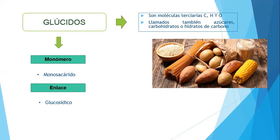Recordemos que esto, ¿dónde lo encontramos? En nuestra alimentación. ¿Y para qué necesitamos los glúcidos? La parte más pequeña de un glúcido es un monómero. De estas biomoléculas orgánicas — glúcidos, lípidos, proteínas, ácidos nucleicos y vitaminas — van a tener un monómero, la parte más chiquita. Por ejemplo, en un salón de clases, la unidad mínima sería un estudiante, y el grupo serían muchos estudiantes. Algo así es un monómero.